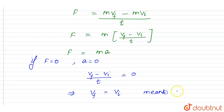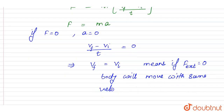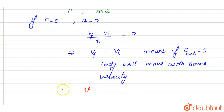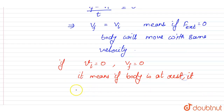That means, if external force — F external — is equal to 0, the body will move with the same velocity. Now, if v initial is equal to 0, then v final will also be 0. That means, if the body is at rest, then it will remain at rest.